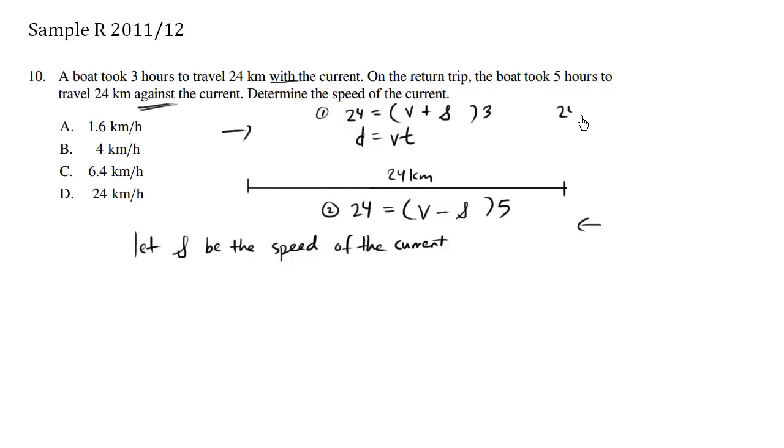Let's use some basic algebra to simplify this. We have equation number one: 24 equals, using distribution, we're going to distribute the three times v, three times s. This is 3v plus 3s. This is equation number one. What about equation number two? 24, let me just do equation number two a little bit closer. 24 equals, again I'm going to use distribution, 5v minus 5s.